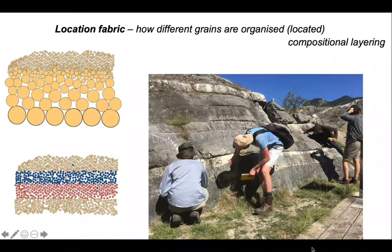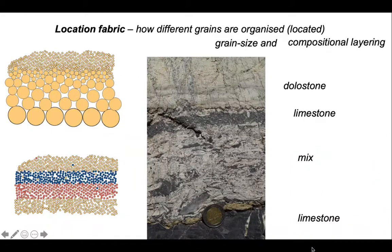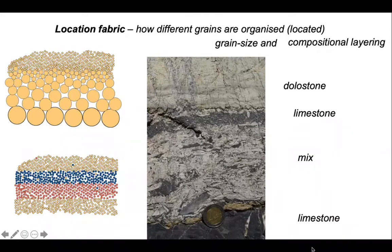Here's another example from an outcrop of carbonates in the French Alps. We can see those white bands and grey bands in the outcrop. If we're able to analyse this rock we'd see that the pale material is dolostone, the dark is limestone. There's a layer of dolostone sitting on some limestone, with a mixture of both in the middle and limestone at the base. In that mixture you can see that the dolostone is forming clasts — objects that change in grain size up into that thin limestone layer. So this is an example of location fabric defined both by compositional layering and by grain size.